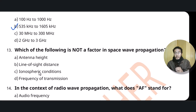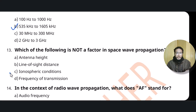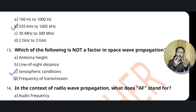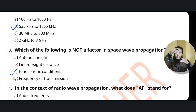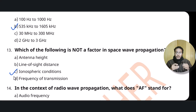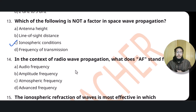Question thirteen: which of the following is not affected in space wave propagation? Space wave is line of sight — both antennas are in the same line. The ionosphere plays no role here, because space waves do not need to be reflected. Antenna height matters, line of sight distance matters, and frequency matters for data transfer — but the ionosphere is not a factor. So option C (ionosphere) is the correct answer.